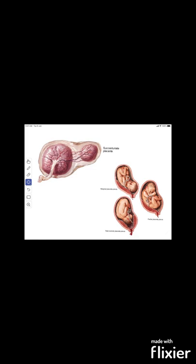The placenta previa may be central or marginal. Next, there is the accessory placenta — sometimes an accessory lobe of placenta, called placenta succenturiata, is connected to the main mass by the fetal membrane.